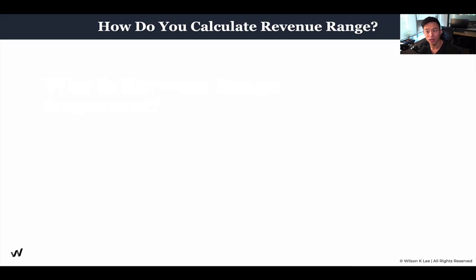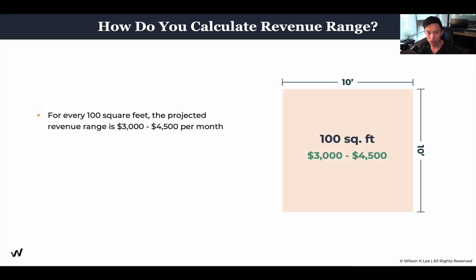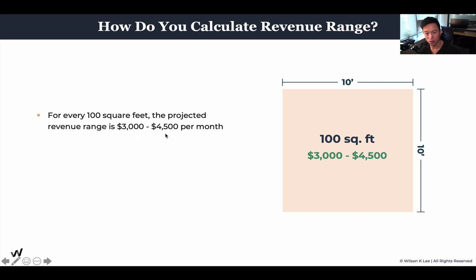How do you calculate your revenue range? In very simple terms: for every 100 square feet of your location, the projected revenue per month is around $3,000 to $4,500. That's a typical range.